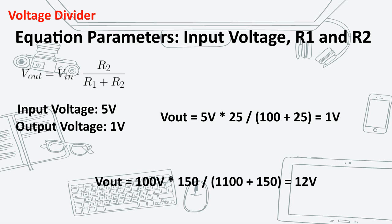Or, if you have 100 volts, and you only need 12 volts, then use the equation. Reset R1 to 1100 ohms, and R2 to 150 ohms. It's as simple as that.